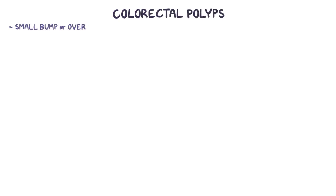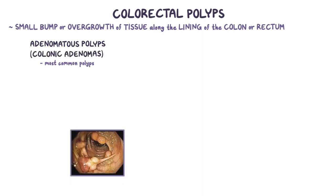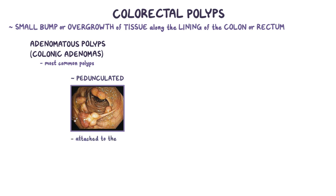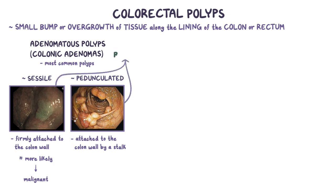A common example of a suspicious lesion is a colorectal polyp, which is a small bump or overgrowth of tissue along the lining of the colon or rectum. The most common polyps are adenomatous polyps, also called colonic adenomas. Adenomatous polyps can either be pedunculated, meaning they're attached to the colon wall by a stalk and able to freely swing around, or sessile, meaning they're firmly attached to the colon wall. Sessile adenomatous polyps are more likely to become malignant and need to be closely observed. If a polyp is found during colonoscopy or flexible sigmoidoscopy, a biopsy should also be done to rule out or confirm cancer.